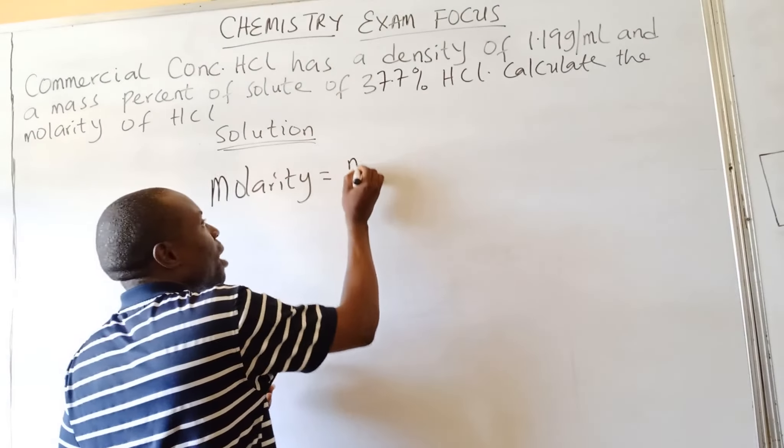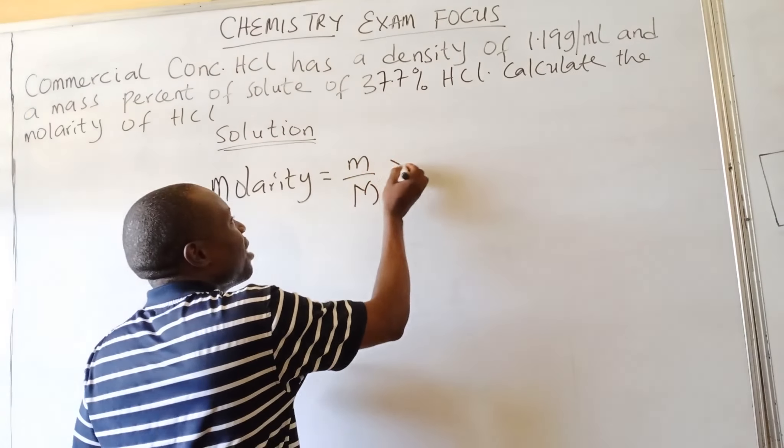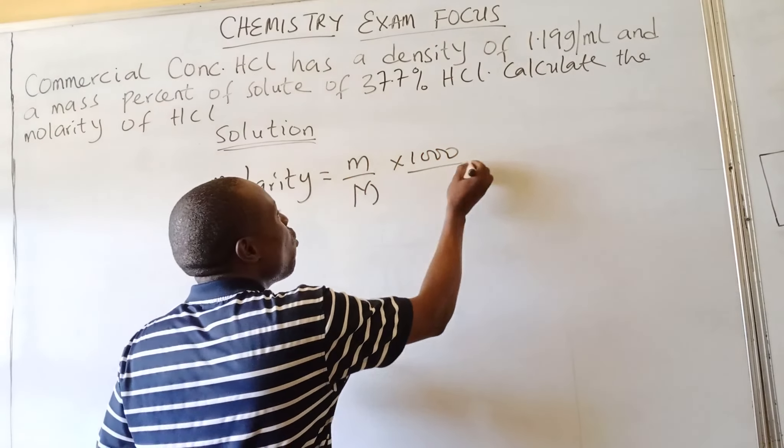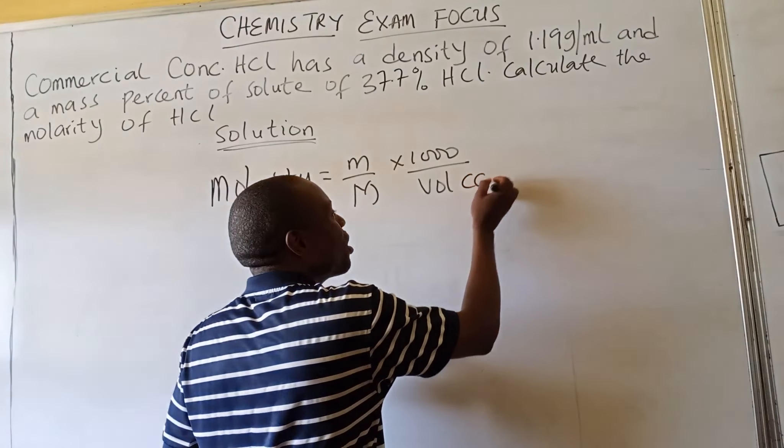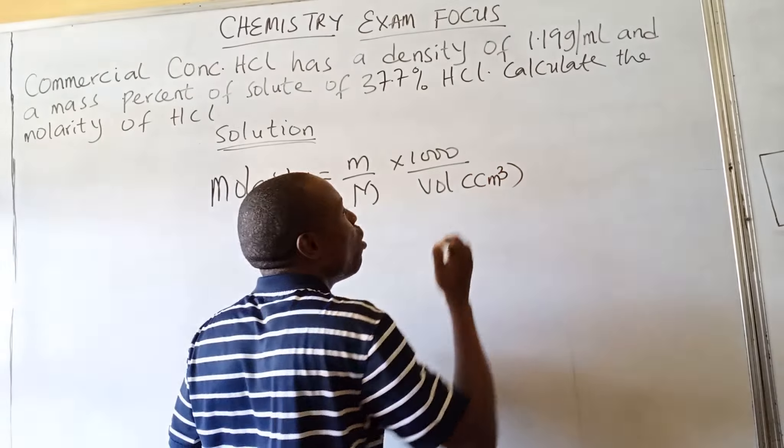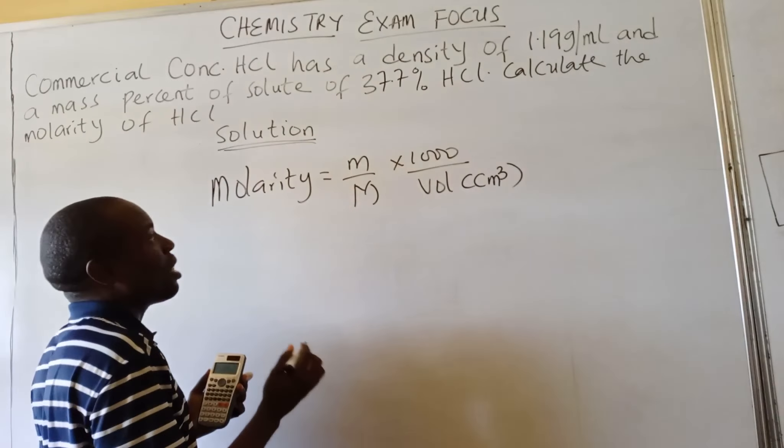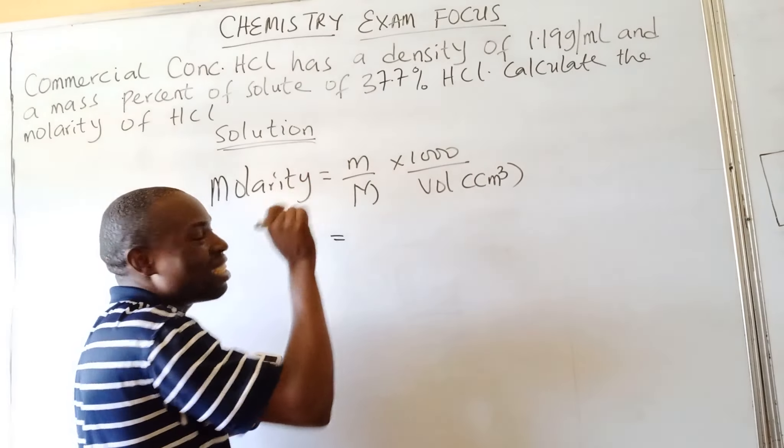The volume is given in cm³ or mL. We should understand that the mass percent here—the mass of the solute which is HCl—is 37.7%, but